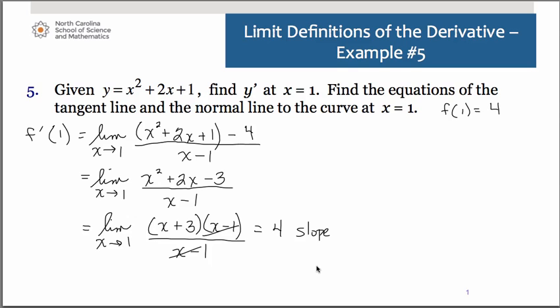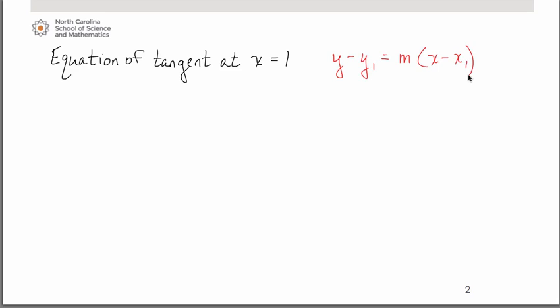So let's find the tangent line equation first. So in order to do that, we are going to make use of point-slope form of a line. Recall that point-slope form of a line is y minus y1 equals m times the quantity x minus x1. And all we need to do is substitute in. We have y minus 4 equals 4, which is the slope,